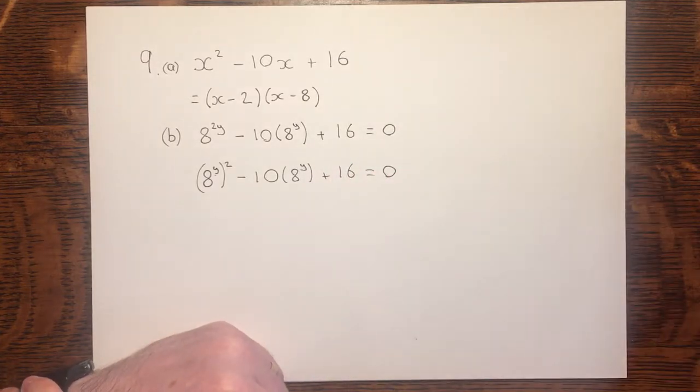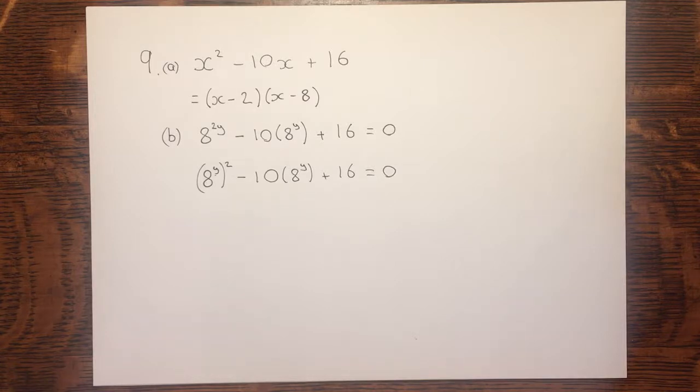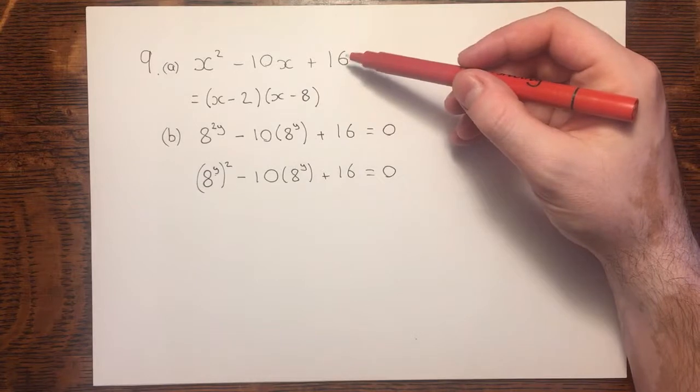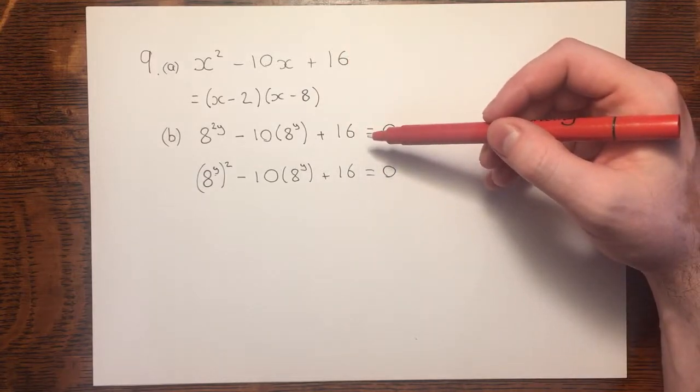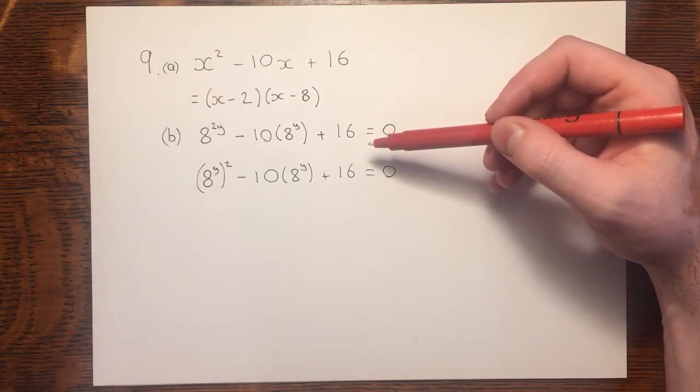It now looks much more similar to our original equation. And that goes back to the wording of the question. In the question, it says, hence or otherwise. That hence means using what you've already done, solve this. The otherwise there is in case you want to do it another way, because you haven't spotted their trick.